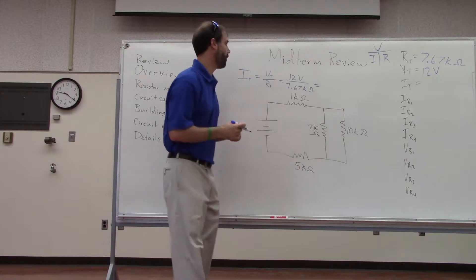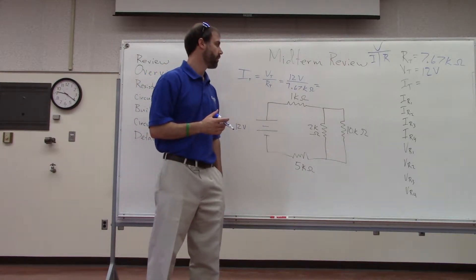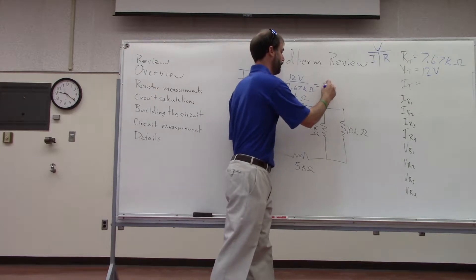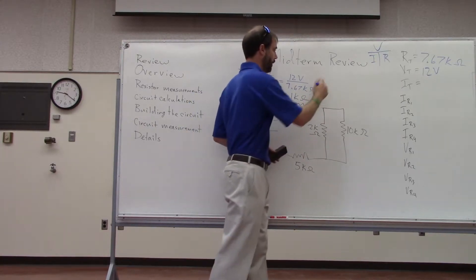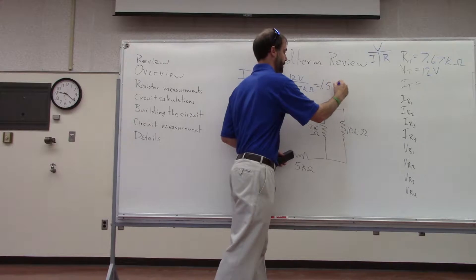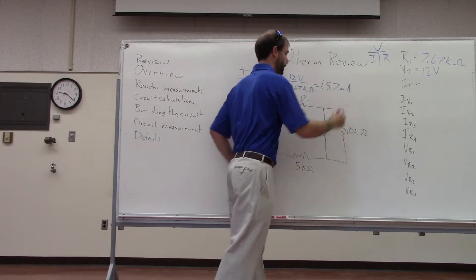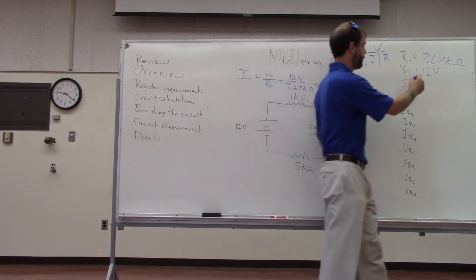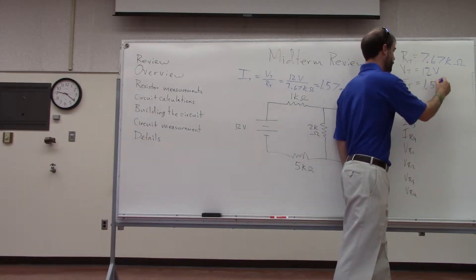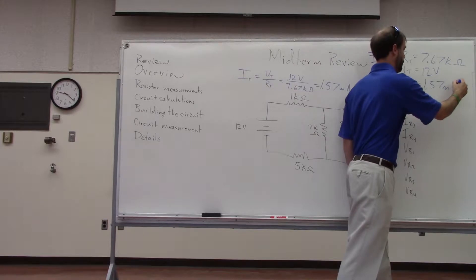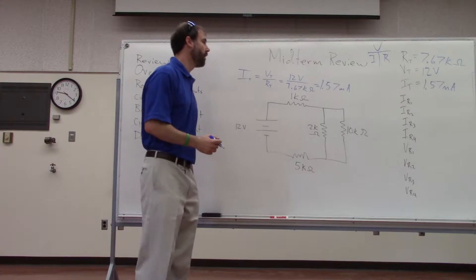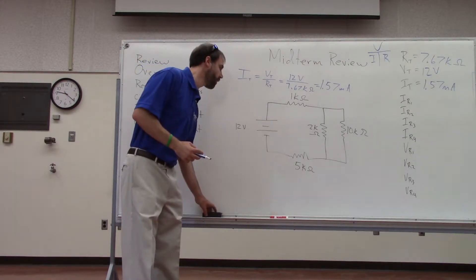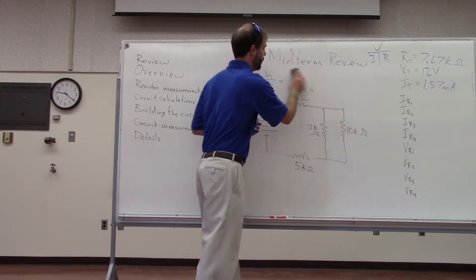The total current comes out to be 1.57 milliamps. That's the current coming out of the power supply, and the same amount returns into the power supply — what leaves always equals what comes back.